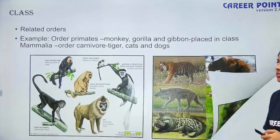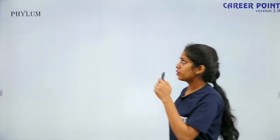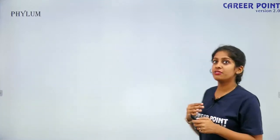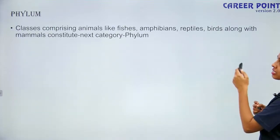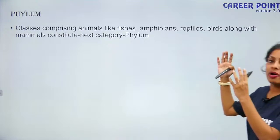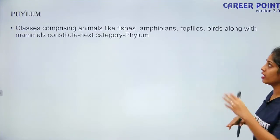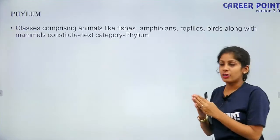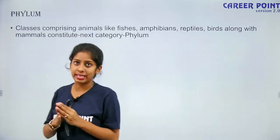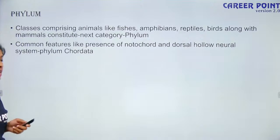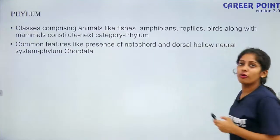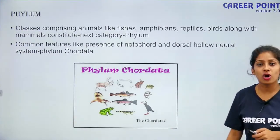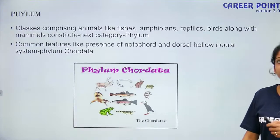A much broader term is phylum. Phylum and division are equivalent terms — phylum is used for animals and division for plants. Classes comprising animals like fish, amphibians, reptiles, birds — you group them with another class: mammals. Now they all come together under one phylum: phylum Chordata. A group of similar classes forms your phylum. They all have a vertebral column and a dorsal hollow neural system, so they come under phylum Chordata.